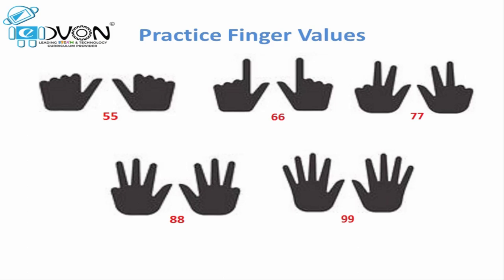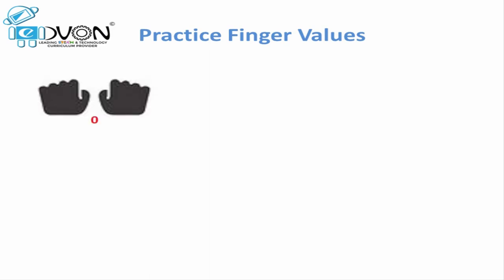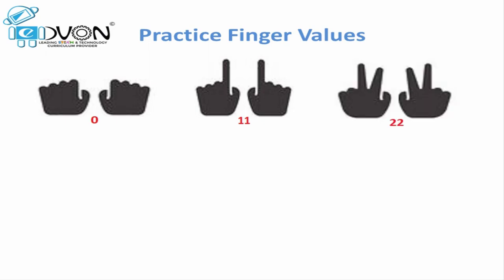This is how we can calculate up to 99 on both hands — that is 90 on the left hand and 9 on the right hand. Similar values are quite easy to calculate. Let's practice similar values one more time. When all fingers on both hands are closed, it represents 0. When one finger on both hands is open, it represents 11. When two fingers are open, it represents 22.